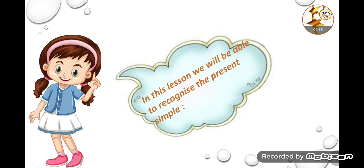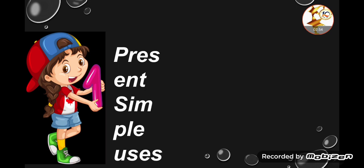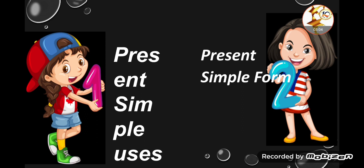In this lesson, we have targets we need to gain. First: recognize the Present Simple. I need to be able to identify the Present Simple, and I need to know its uses — the usages. Second: the Present Simple form — what the sentence looks like. I want to know the usages, but I also need to know how to build sentences in the Present Simple.